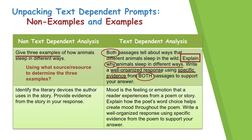Let's look at another set — the non-example on the left and the example on the right. The non-example asks: identify the literary devices the author uses in the story. Provide evidence from the story in your response. This prompt is closer to text-dependent analysis because it says to provide evidence from the story, but it asks in a very general way to identify the literary devices — name all or most of them. This makes it close, but it's not a depth of knowledge level three prompt.